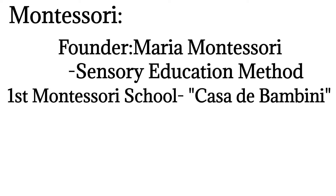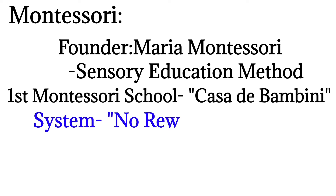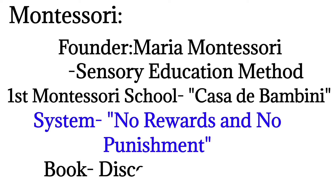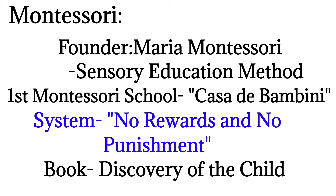Casa dei Bambini was the first Montessori school in Rome, which was opened by Montessori. Casa dei Bambini means 'children's home' or 'school for children.' She introduced an apparatus called the didactic apparatus for self-learning and self-correcting. The system followed in Montessori is no rewards and no punishments. She wrote a book named 'Discovery of the Child.'